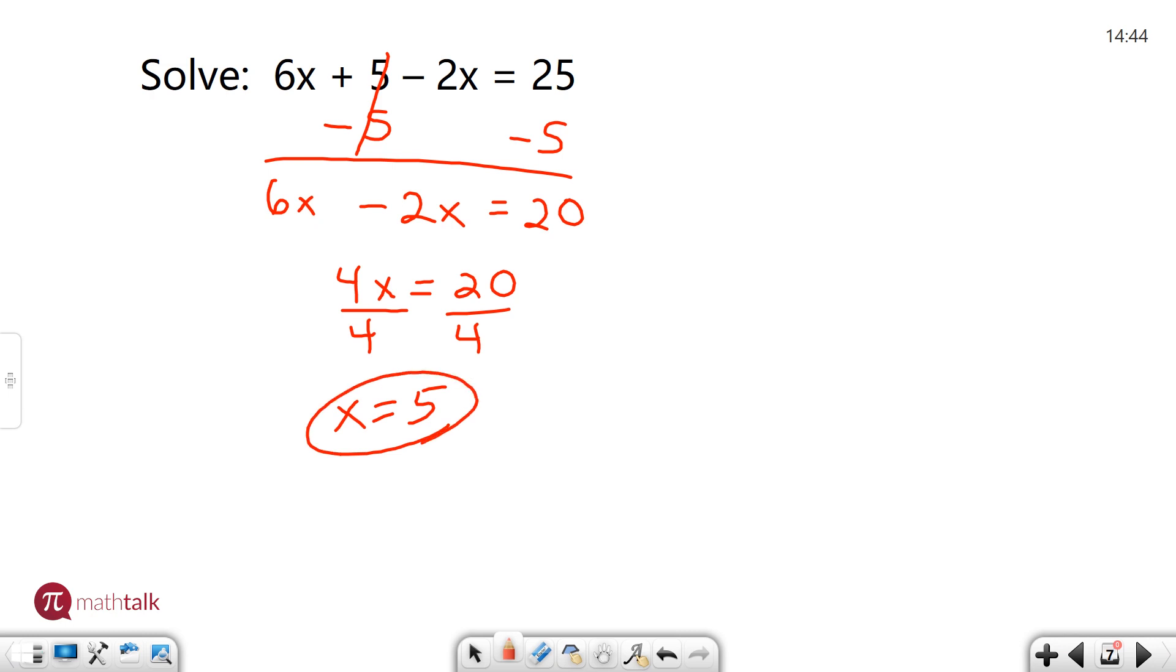So the solution to this multi-step equation is x equals 5. If I were to go back and plug in 5 to x I would see that the left half equals the right half, and I know my solution is correct.